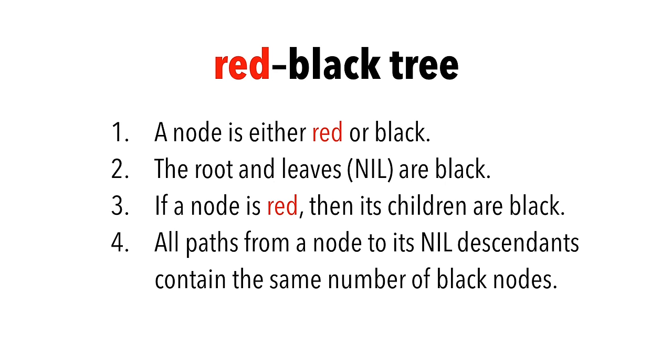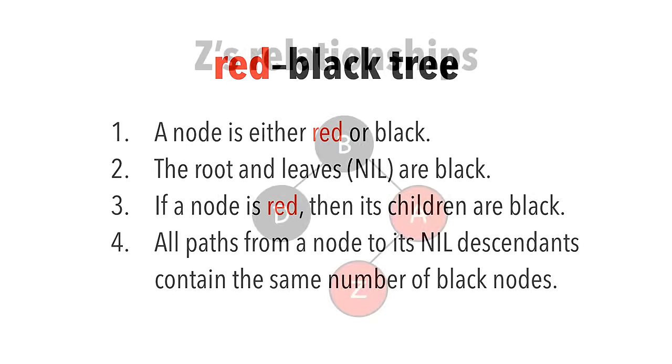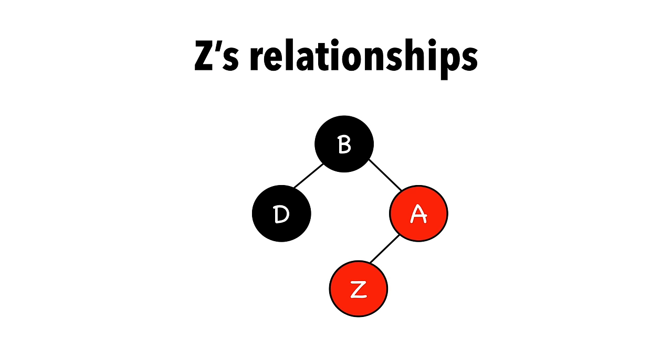As a short reminder, here are those properties. We've covered them previously so I'll let you review them yourself. Let's also do a quick refresher on relationships in a binary tree. A is Z's parent, B is Z's grandparent, and D is Z's uncle.